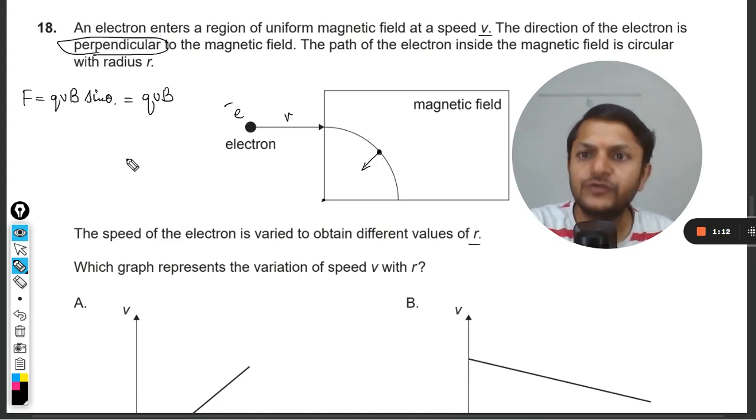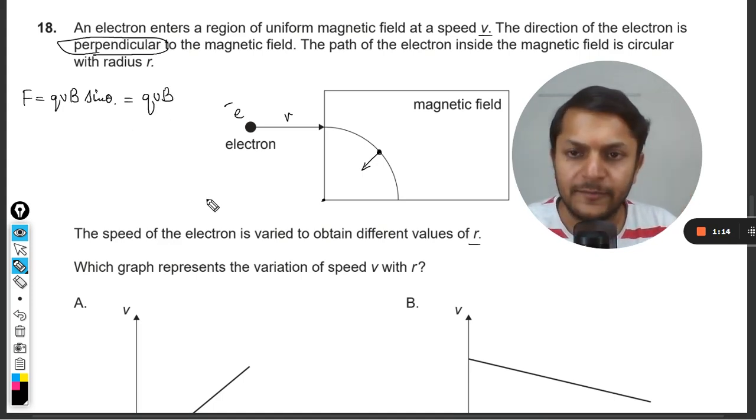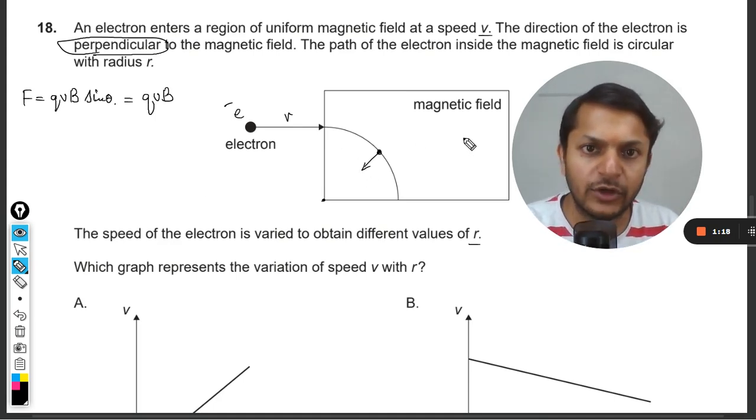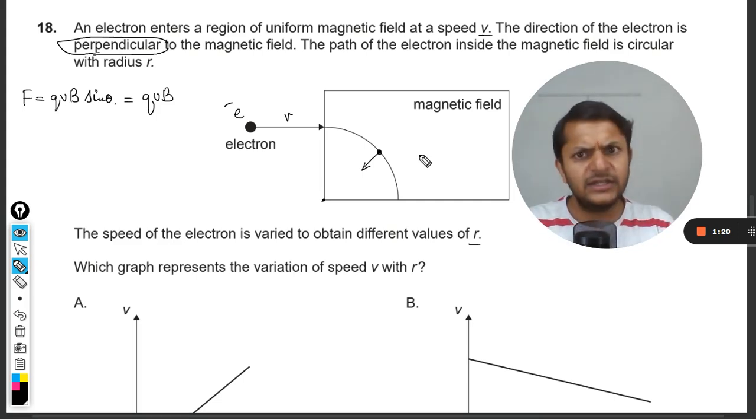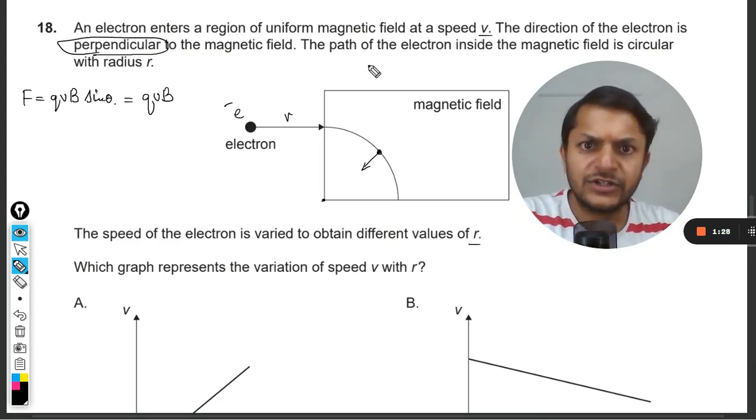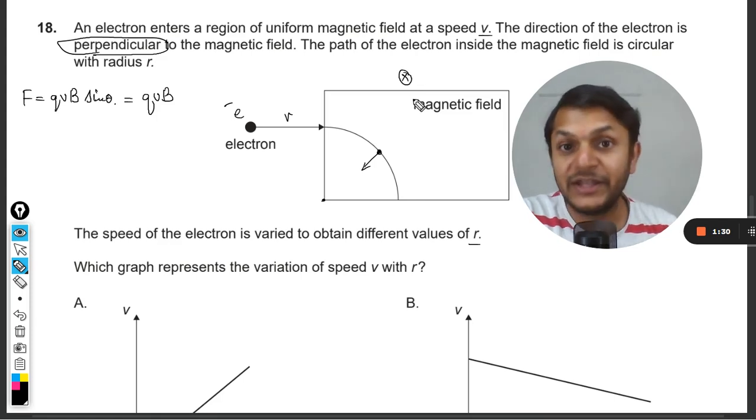Now the force which is acting on an electron—the direction cannot be found because the magnetic field is not given, but the force is given so we can find the direction of the force. It is downwards, so the magnetic field will be into the page.